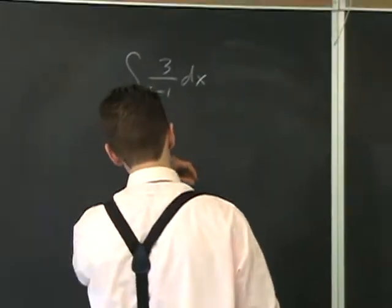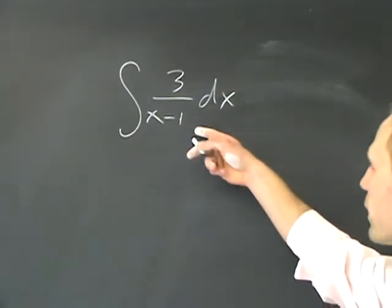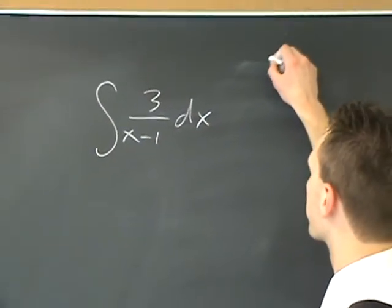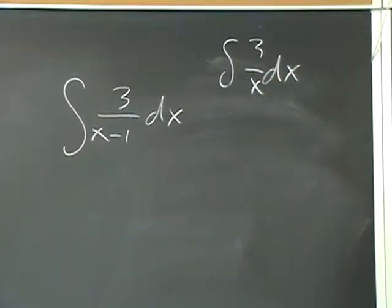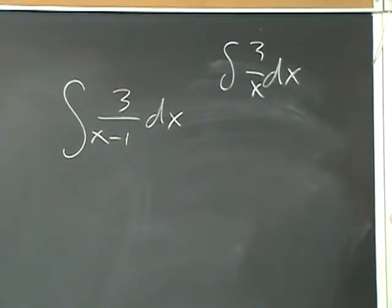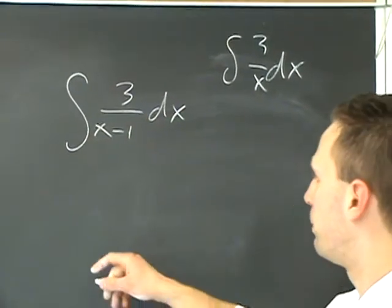Next one over here, what could this be? It looks intimidating. Well, this isn't a whole lot different from the integral of 3 over x dx, whose anti-derivative is 3 ln absolute x.